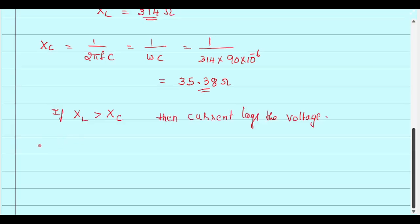Let us calculate the impedance X. Impedance X is given by XL minus XC. XL is 314 minus XC is 35.38 ohms. So your X is 278.6.